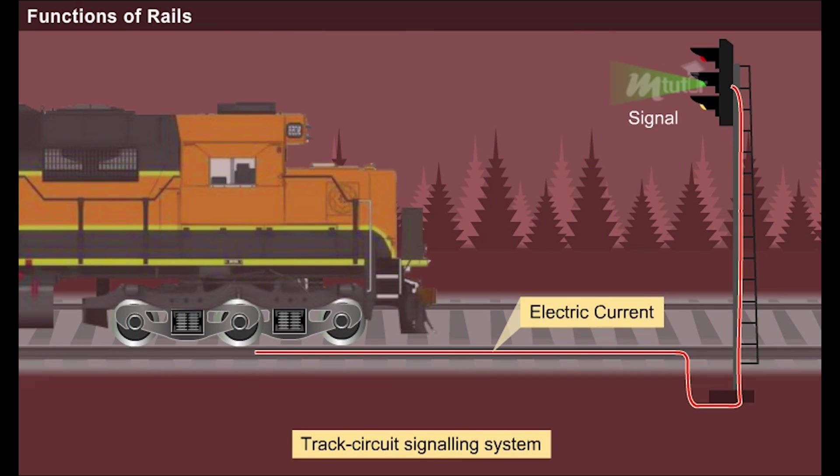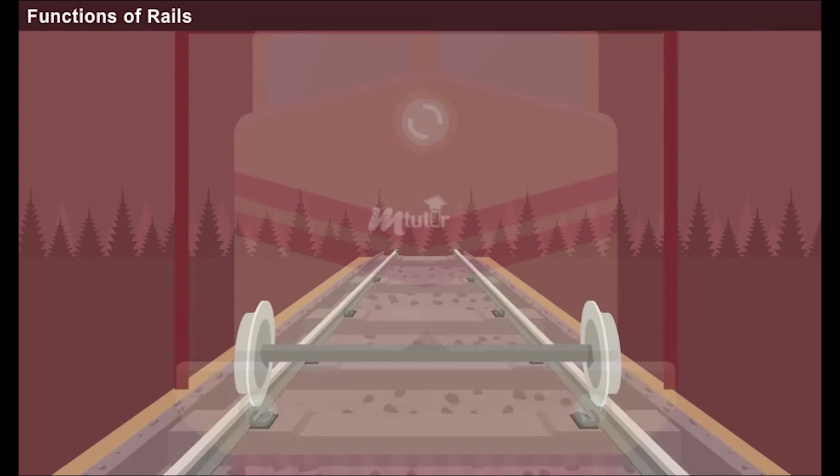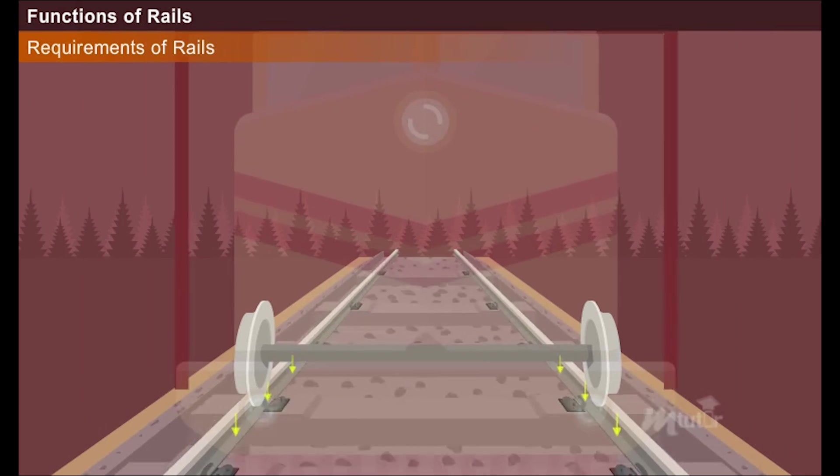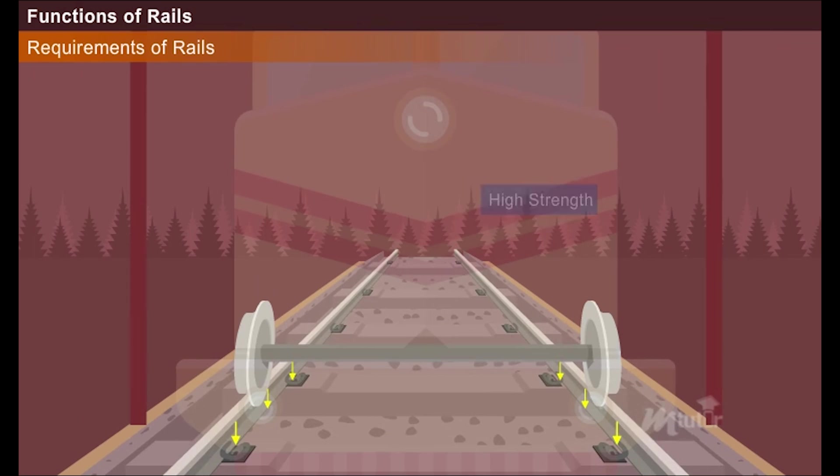In order to fulfill the functions effectively, the rails must possess the following qualities. Besides the very high axle loads, the rails also experience the dynamic effect of the moving wheels. Hence to resist these loads, the rails must possess high strength and must be of good quality.